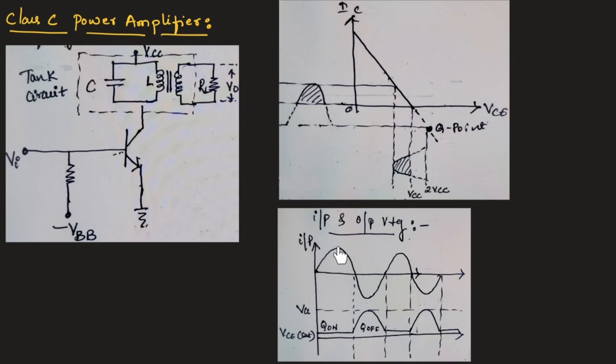This is the input and output waveform. During positive half of the input, the transistor will be on. That is why the output will be constant across the load resistor.